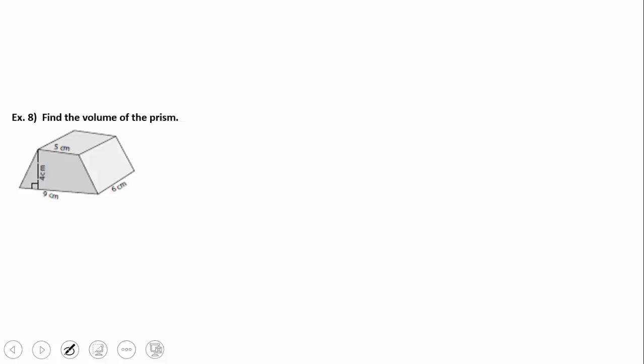Moving right along, find the volume of this prism. Once again, when I hear volume, I think of the formula, area of the base times the height. Then I take a look at my prism. I look at my prism and I see I've got a trapezoidal base. I have a trapezoid here. I know I have one in the back. It's a trapezoidal base, so this base is going to be the area of a trapezoid.